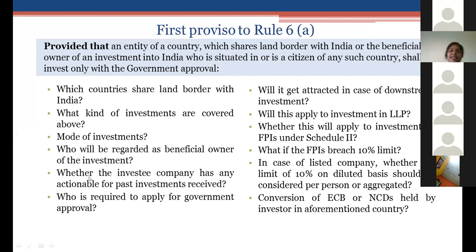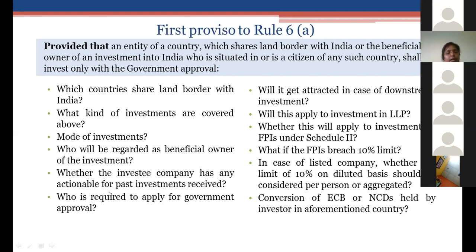Any allotment made up to April 21, 2020 requires no action. Any allotment intended from April 22, 2020 onward to an entity from any of the seven land-border countries can only be made after obtaining government approval.